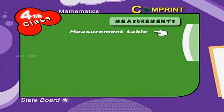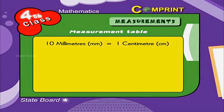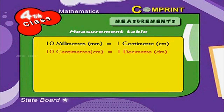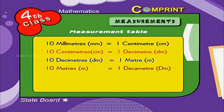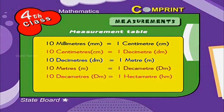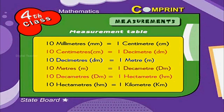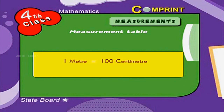Now let us look at the table of measurement of length. 10 millimeters is equal to 1 centimeter. 10 centimeters is equal to 1 decimeter. 10 decimeters is equal to 1 meter. 10 meters is equal to 1 dekameter. 10 decameters is equal to 1 hectometer. And 10 hectometers is equal to 1 kilometer. We have already learnt: 1 meter is equal to 100 centimeters and 1 kilometer is equal to 1000 meters.